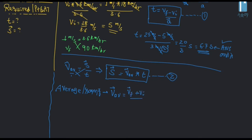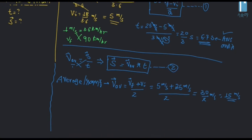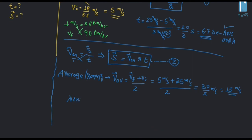The average velocity is V final plus V initial over 2. The distance s equals the average velocity times time. Distance equals average velocity times t, giving us the result in meters.